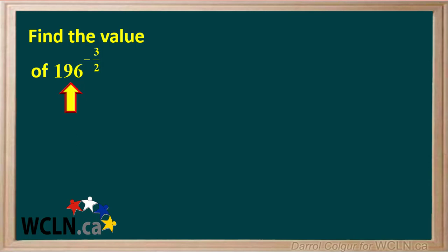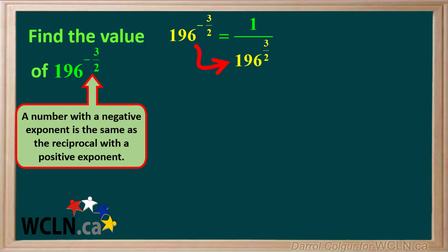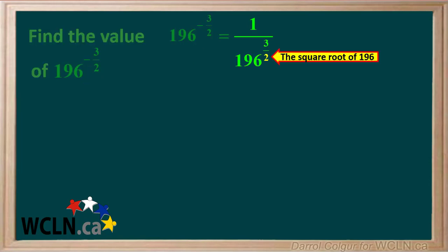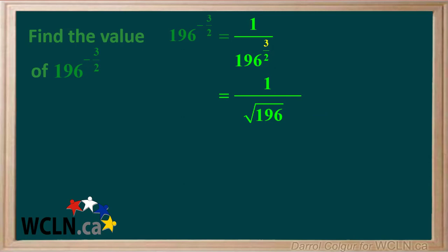Let's do another example, this time with a negative exponent. We're asked to find the value of 196 to the power of negative 3 over 2. Remember, a number with a negative exponent is the same as its reciprocal with a positive exponent. So 196 to the power of negative 3 over 2 is the same as 1 over 196 to the power of positive 3 over 2. The 2 in the denominator means the square root of 196, and the 3 in the numerator means the square root of 196 is raised to the power of 3.